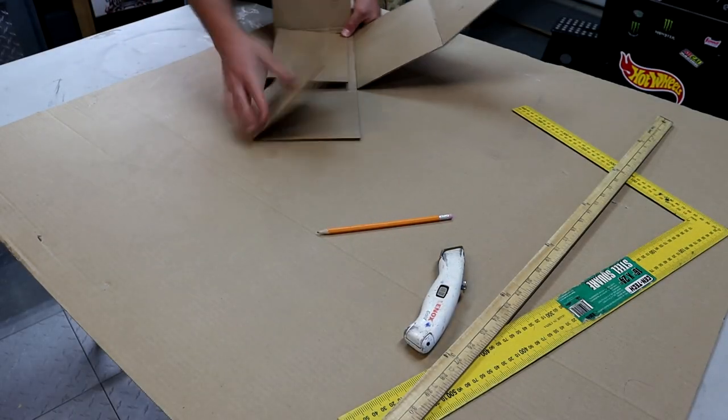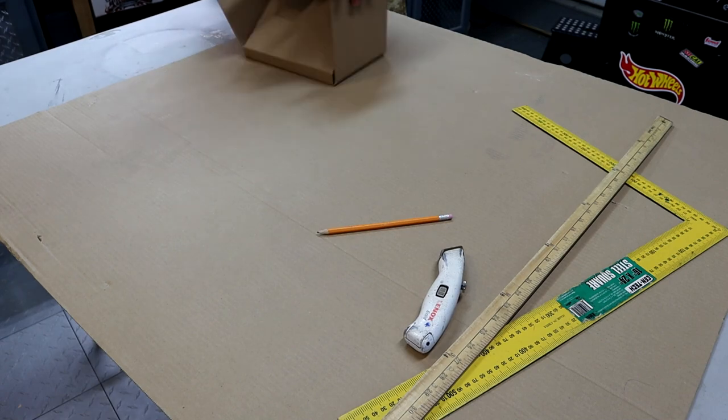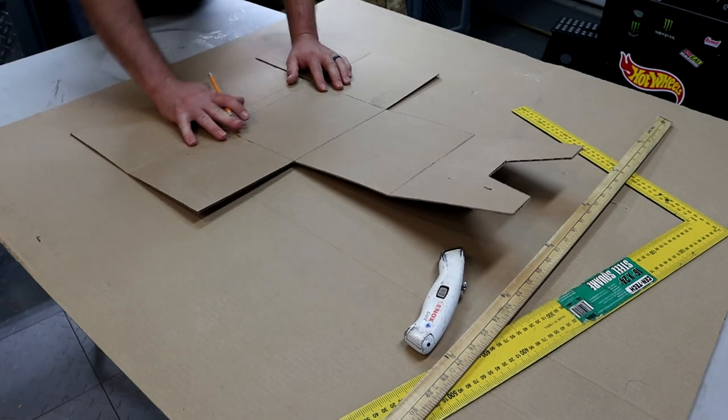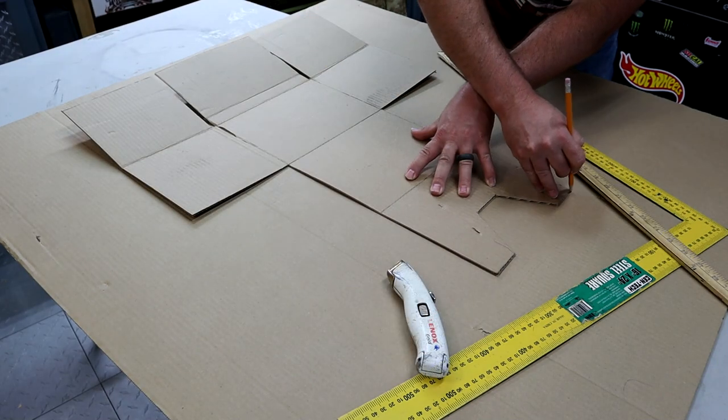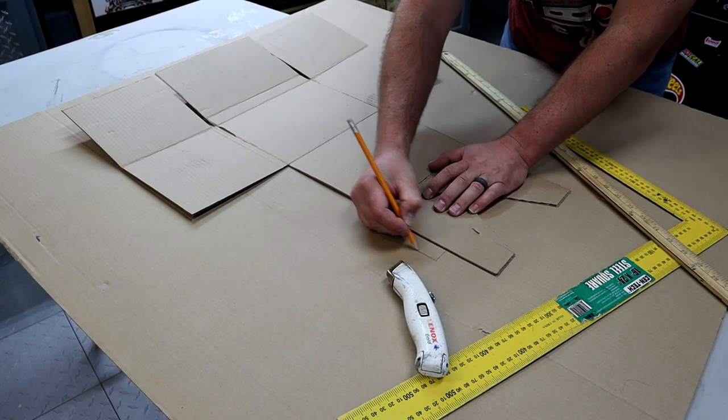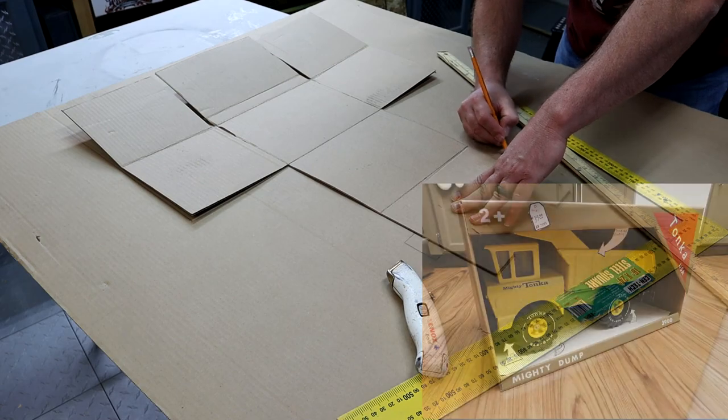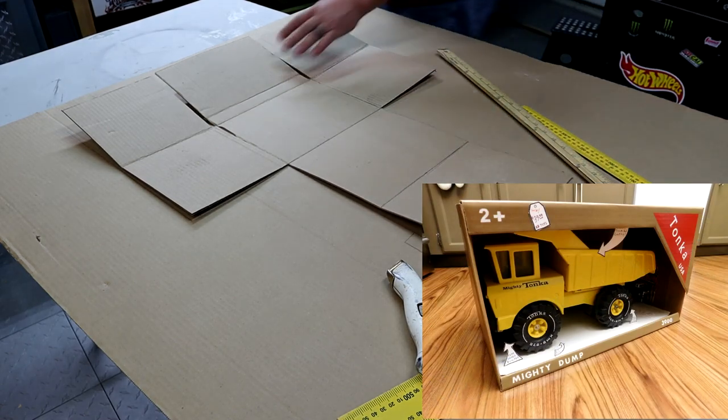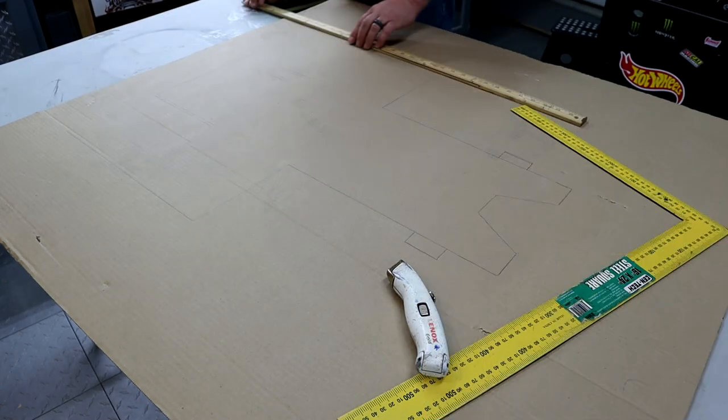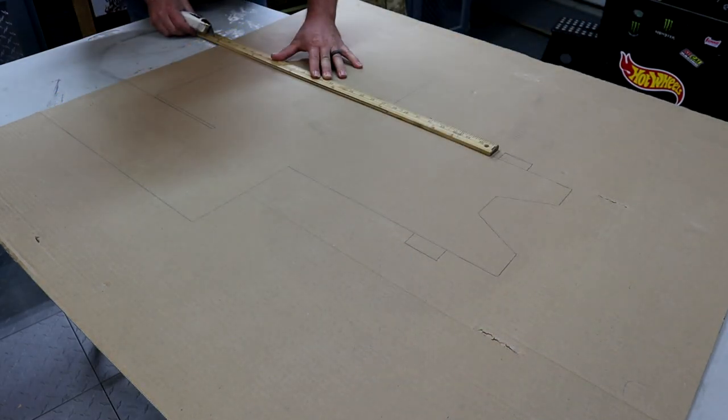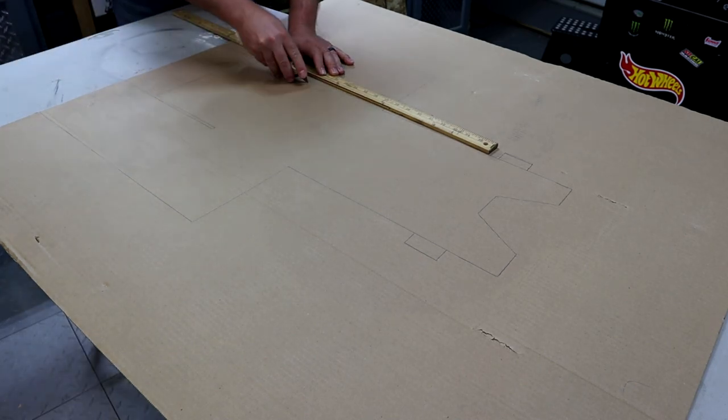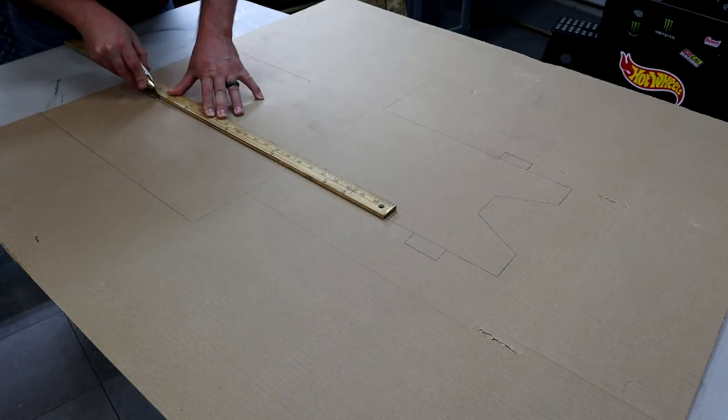While we let the paint dry, let's make a box. Now I made a test box here just to see how this is going to work out. I've only done this one other time with a Tonka truck, seen here. And I decided I was going to make a box for this little tractor here. And I learned a lot from that test box. So let's lay it out, draw it out, and then I'll cut it out, and then we'll do the folds.